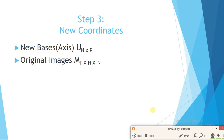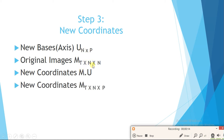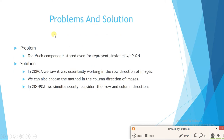The new basis U is n×p, and the original image matrix M is t×n×n. We find new coordinates as M dot U: since n×n in M and n in U share a common dimension that cancels, the result is t×n×p. So new coordinates are t×n×p where n×p is the new image dimension. However, n is still large, so storing even a single image requires n×p components — this is still a problem.